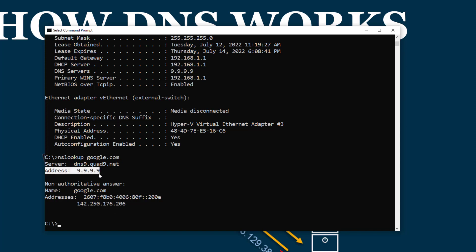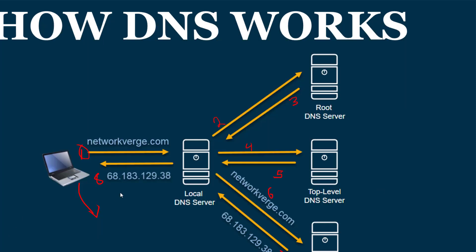Nslookup also shows the DNS server it used for the lookup. There are commands you can use to change the DNS server to test lookups with a different server, which is helpful for checking caching issues or if your local server is having problems. A lot of these steps can be skipped if your computer has a local cache — that cache could be from your Windows operating system, your browser, or your local DNS server. Let me show you that.